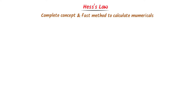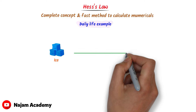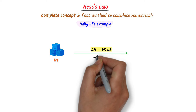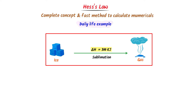Firstly, let me teach you one daily life example. Let's consider this ice cube. It absorbs ΔH = 300 kilojoule energy from the surrounding. As a result, it sublimes to gaseous state. This is a direct path, or one-step process.